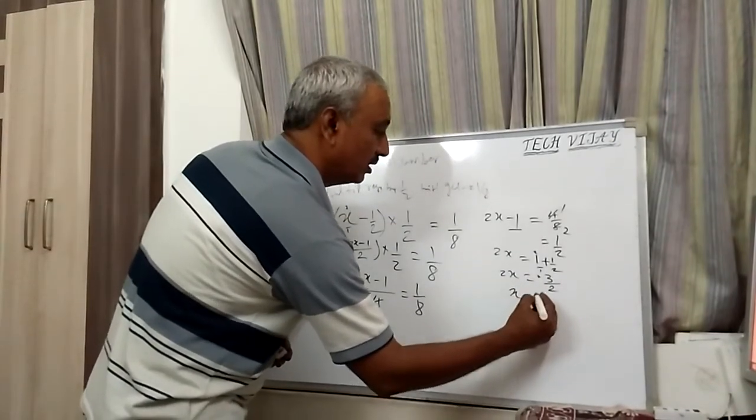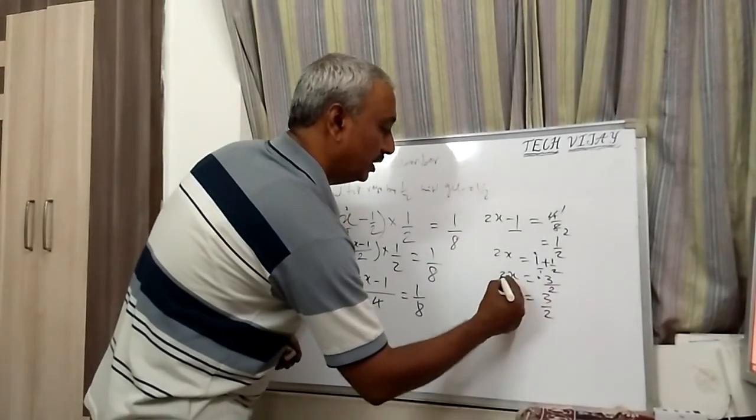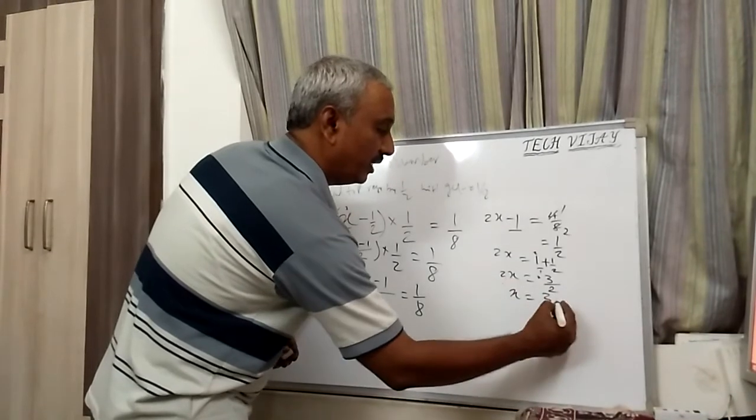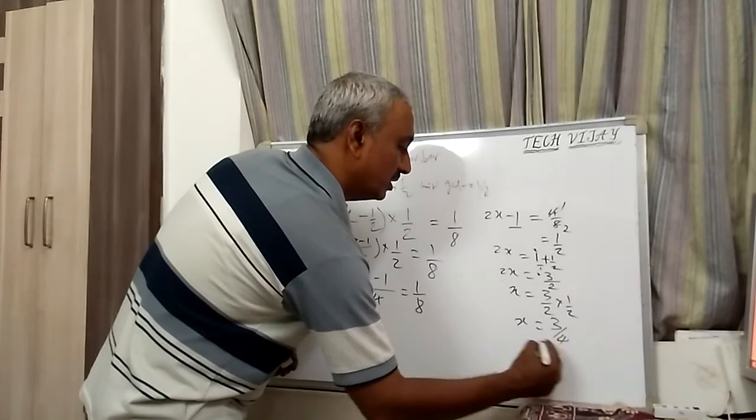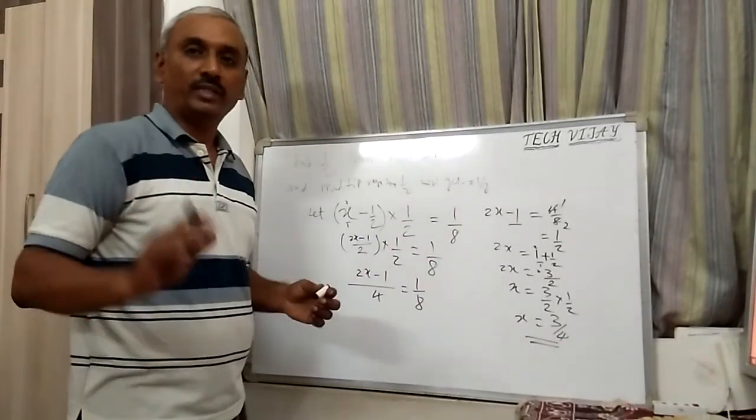3 divided by 2. So here x is equal to 3/2. This 2 by 1, here it will come 1/2. So x is equal to 3 divided by 4. This is the answer. Thank you.